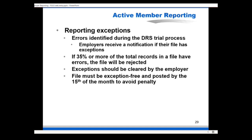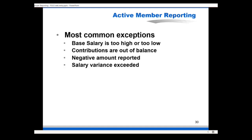Reporting exceptions are errors identified in a file during the DRS editing process. If you have any exceptions in your file you will receive a notification, and if 35% or more of total records in a file have errors, the whole file will reject. Just like in version 2, files must be posted free of exceptions by the 15th of the month to avoid penalty. Step-by-step instructions for clearing the most common exception types will be available before the start of parallel processing in October.